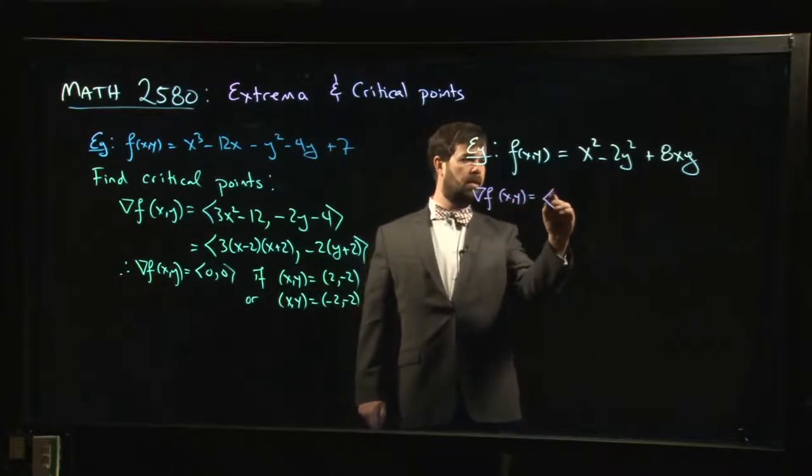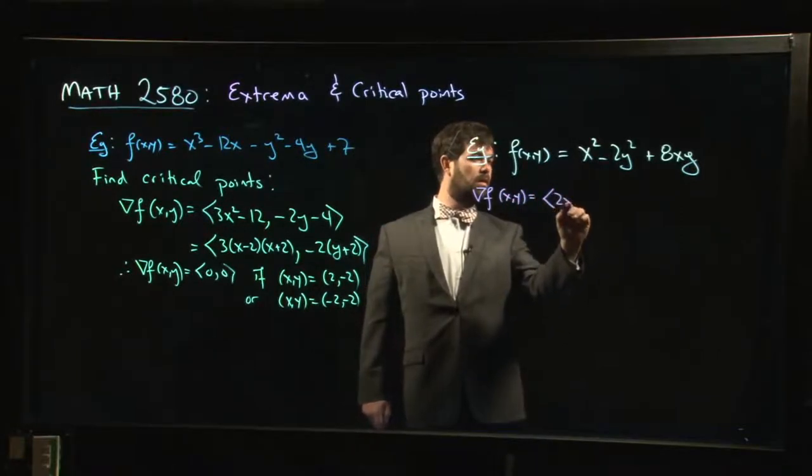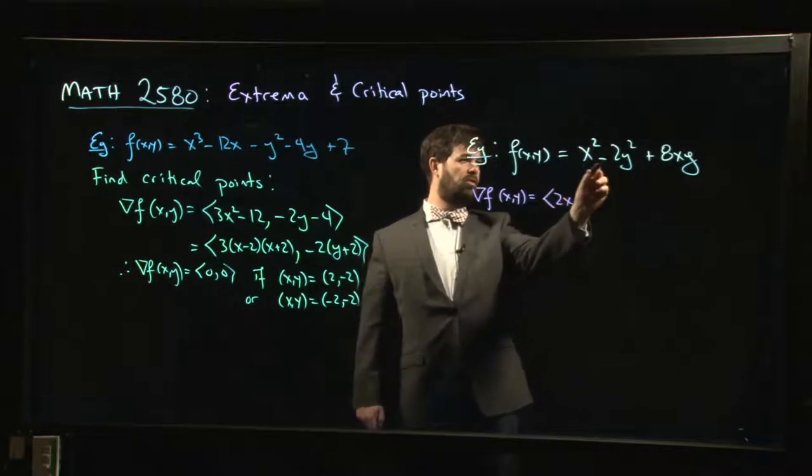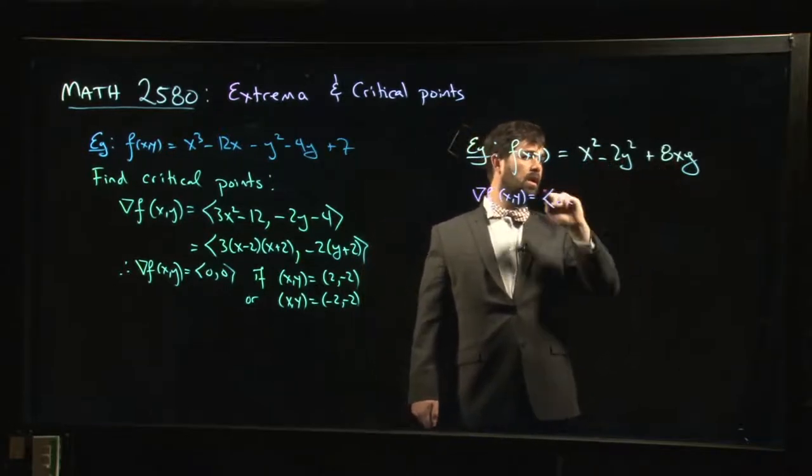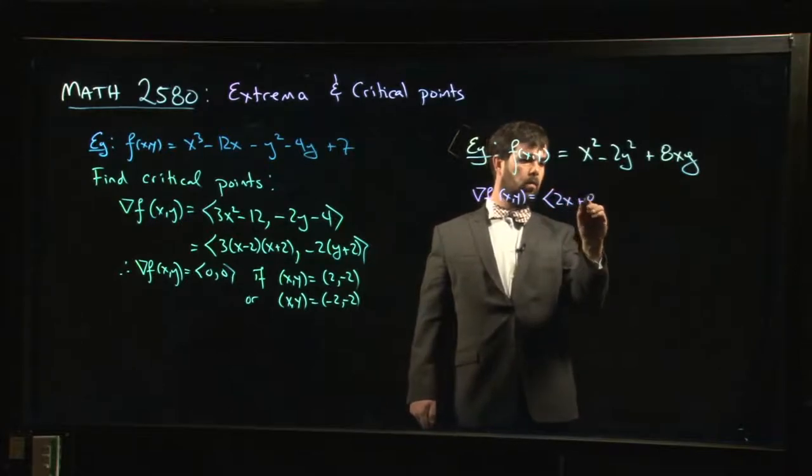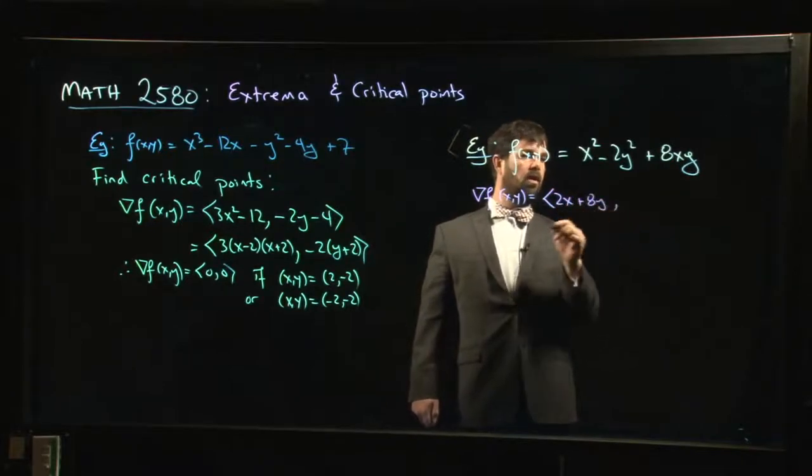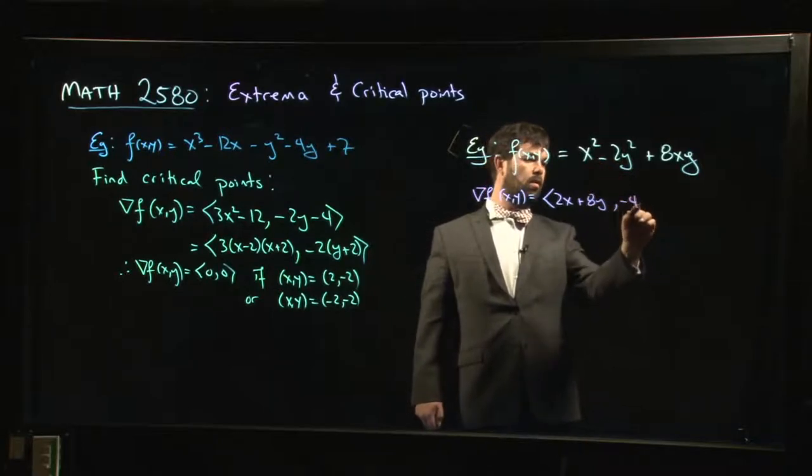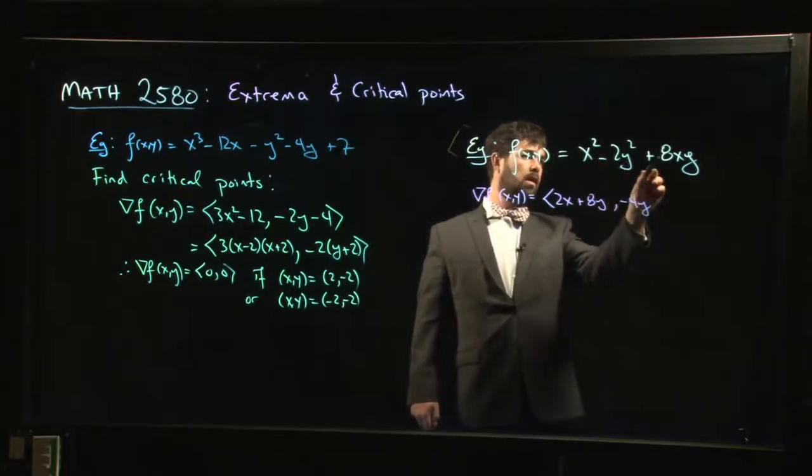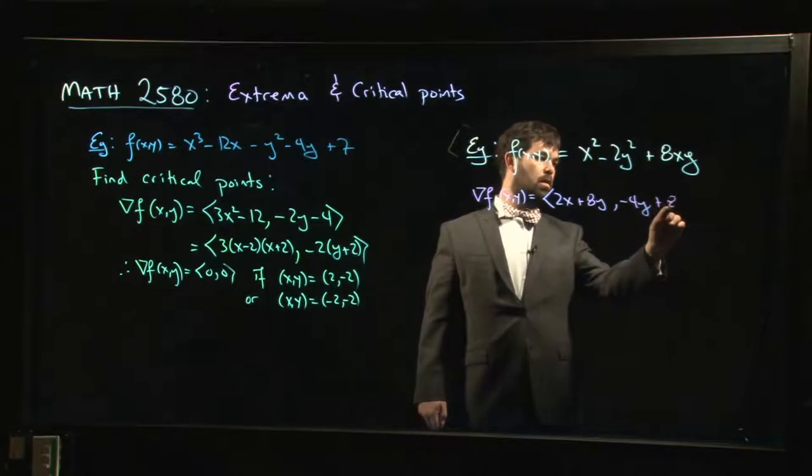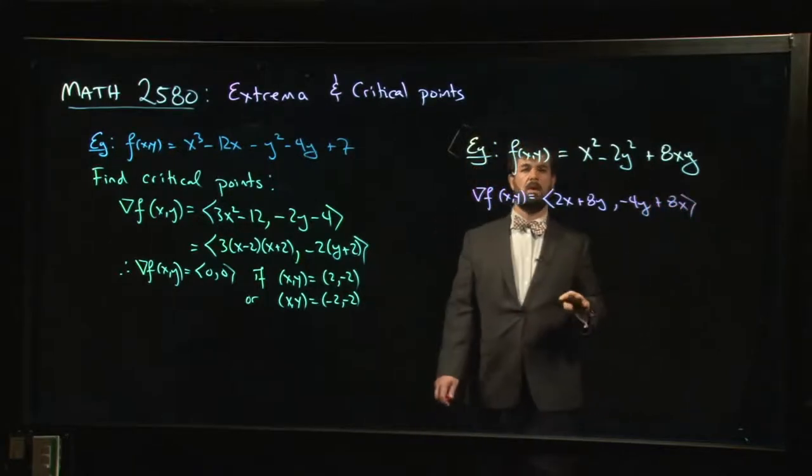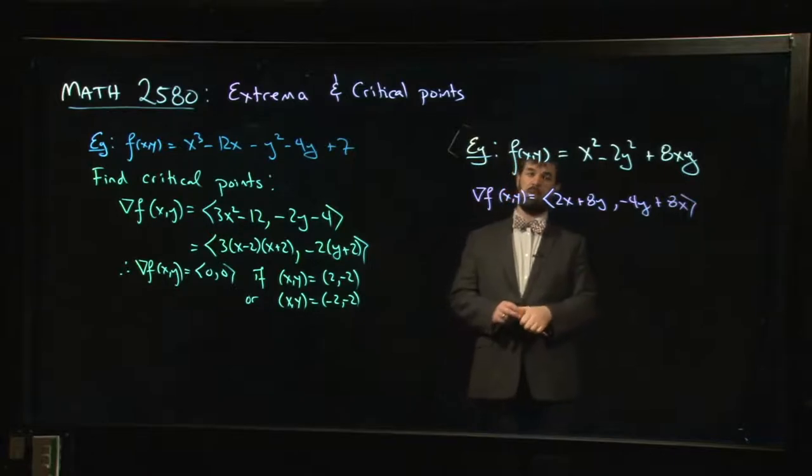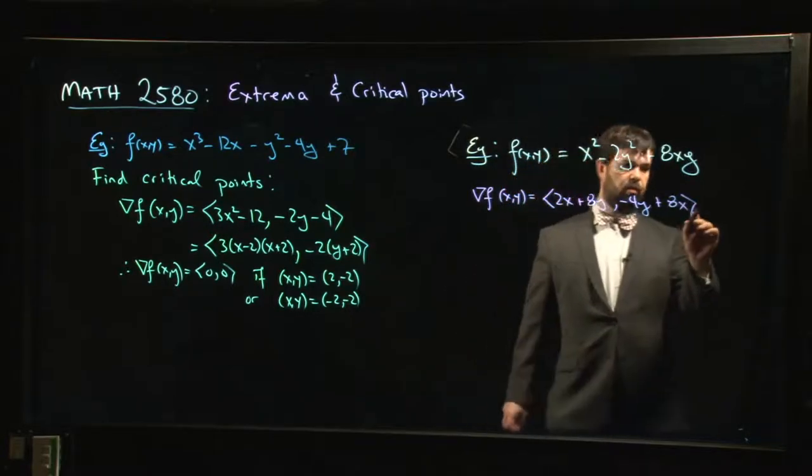So we want the x derivative. So 2x, that's 0 for taking the derivative with respect to x. Here we get 8y. And then we do the y derivative, we get -4y + 8x. And we need that to be equal to (0,0).